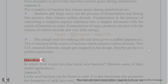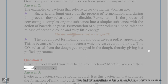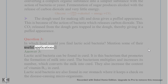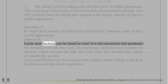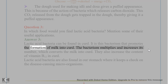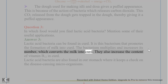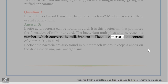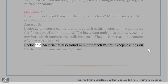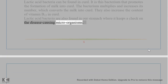Question 3. In which food would you find lactic acid bacteria? Mention some of their useful applications. Answer 3. Lactic acid bacteria can be found in curd. This bacterium promotes the formation of milk into curd — it multiplies and increases in number, converting milk into curd. They also increase the content of vitamin B12 in curd. Lactic acid bacteria are also found in our stomach, where they keep a check on disease-causing microorganisms.